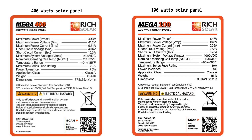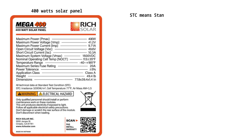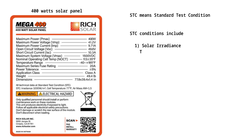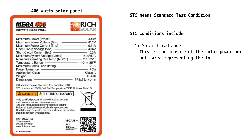The solar panel test is performed under standard test conditions, abbreviated as STC. These conditions include: 1. Solar irradiance of 1000 watts per square meter — this is the measure of solar power per unit area, representing the intensity of sunlight reaching the panel.